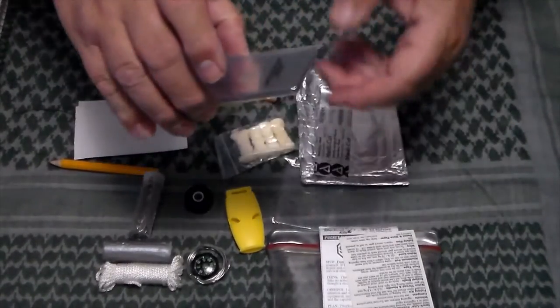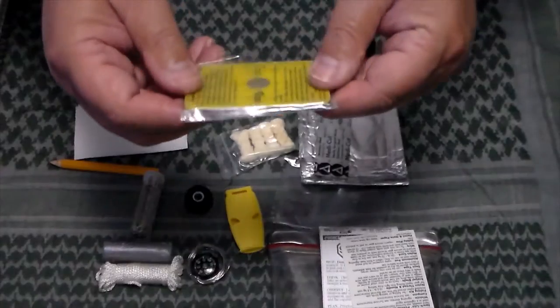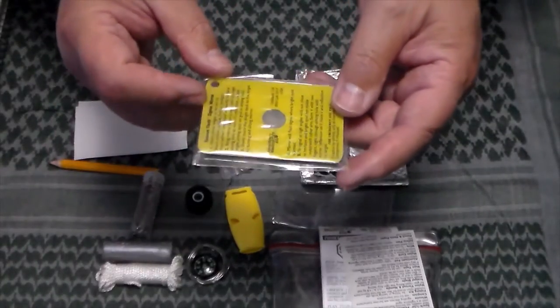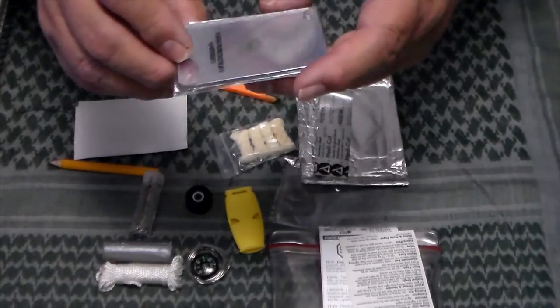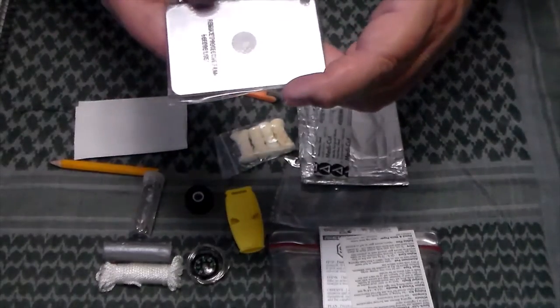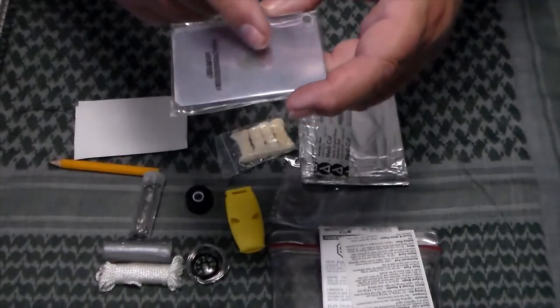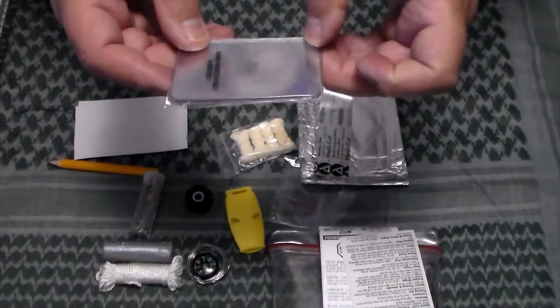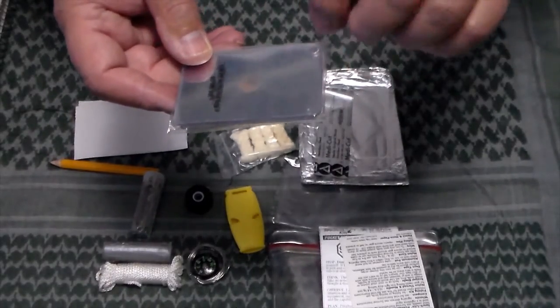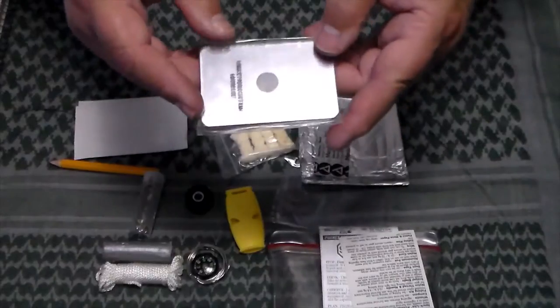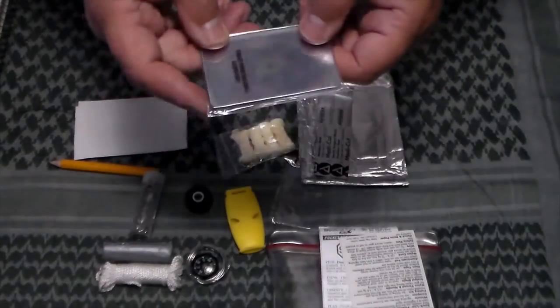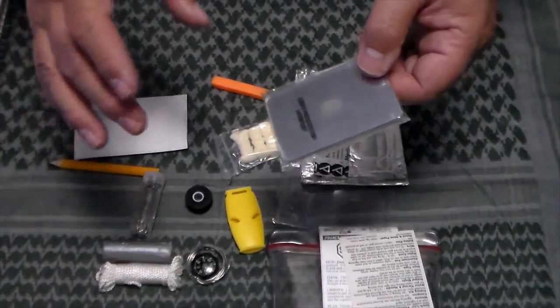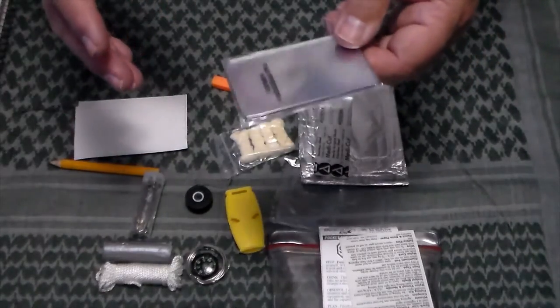And then you have the signal mirror. And it's in a plastic case. It has instructions on the back how to use it. It's a pretty good signal mirror. You've got your, here in the middle, your aiming spot. Also has a hole in it to where, again, take some cordage. And probably put the whistle and the mirror together. Hang it around your neck so you don't lose it.